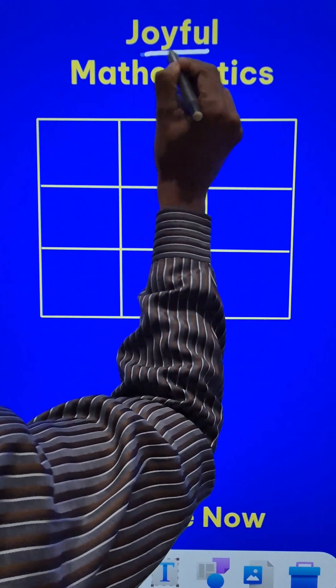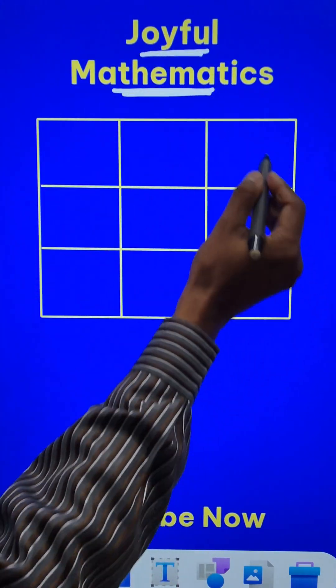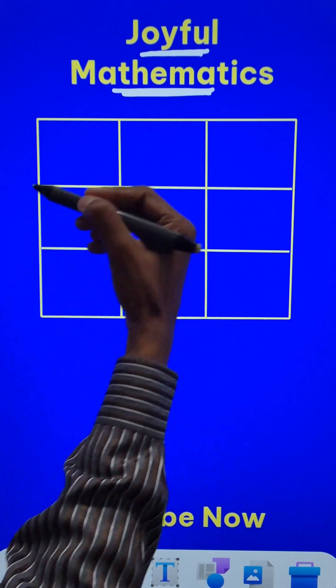Here is a piece of joyful mathematics. You can see a 3 by 3 matrix which I have drawn here. Let me write some numbers on the right hand side.